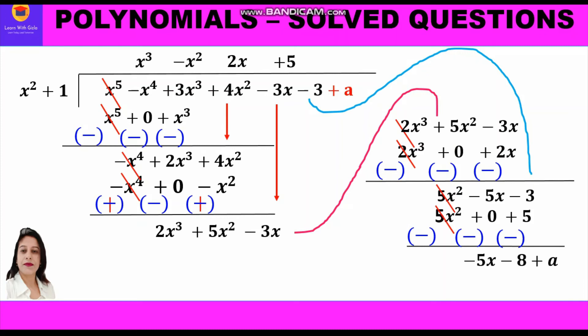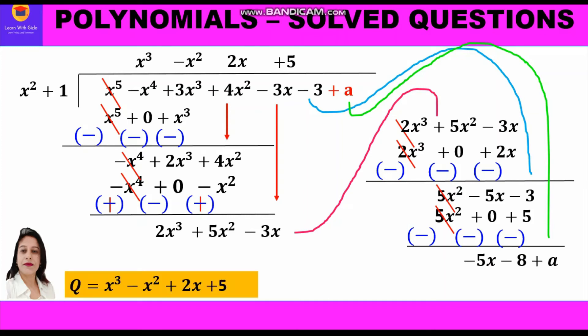This is our remainder: -5x - 8 + a. We cannot continue since the degree of the divisor (degree 2) is now greater than the degree of the remainder (degree 1). So we stop the division. The quotient is x³ - x² + 2x + 5, and the remainder is -5x - 8 + a.